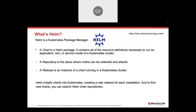A release is an instance of a chart running in a Kubernetes cluster. Releases are separated by release name, which means you can have multiple releases of, say, a gateway chart running in the same namespace in the same cluster. All of the resources are going to be separate based on that release name, so you don't have conflicts between different gateway clusters and so on.